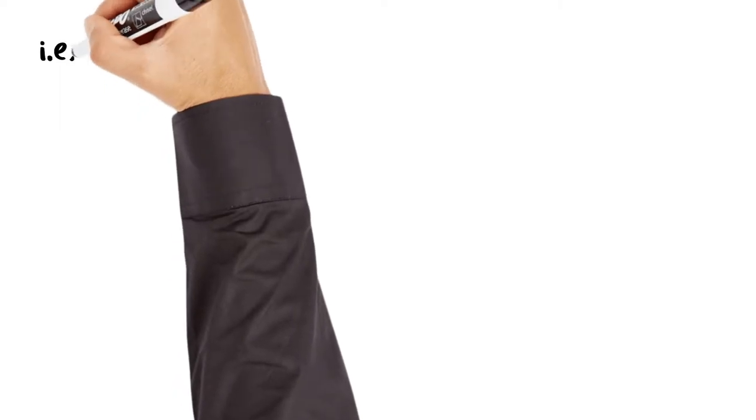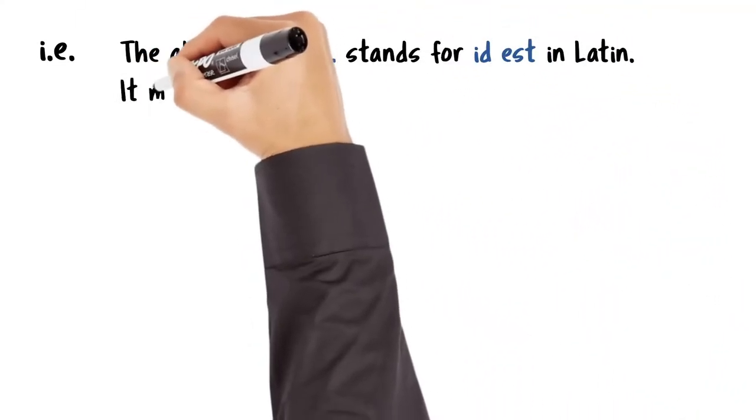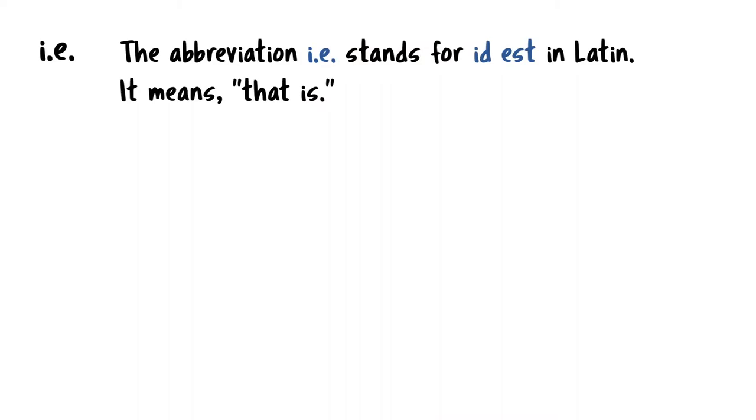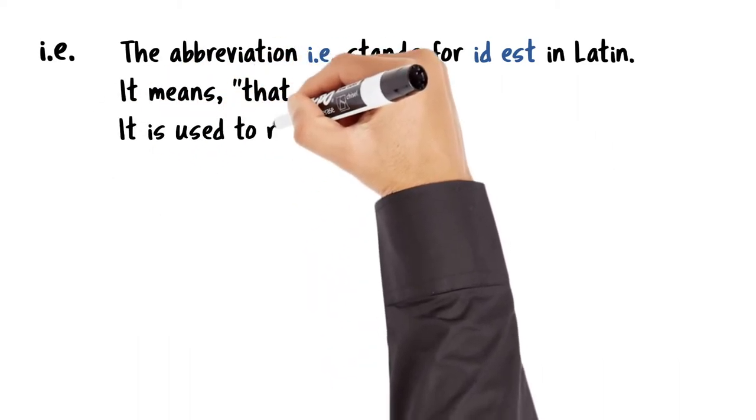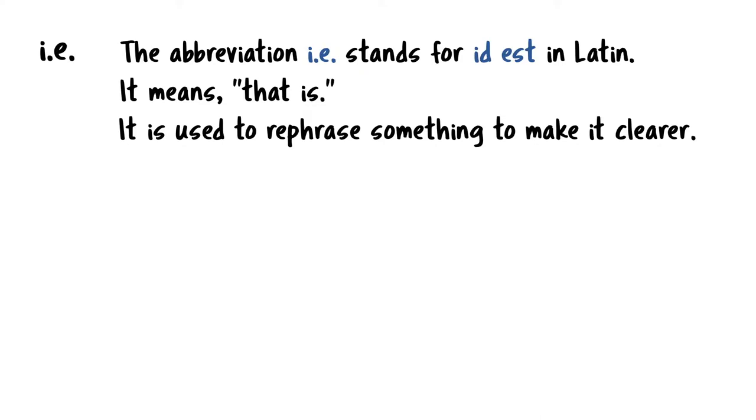The next abbreviation is I-E, also with periods after each letter. It stands for id est in Latin, and it means that is. This abbreviation is used to say something again with different words to make it clearer. This is similar to the phrase in other words.